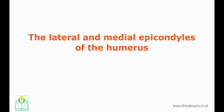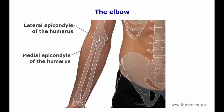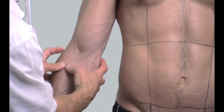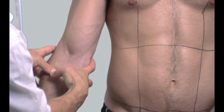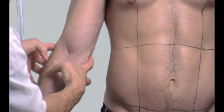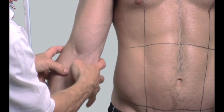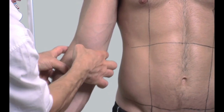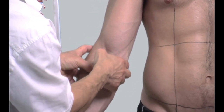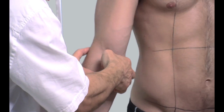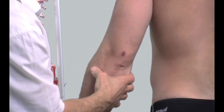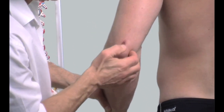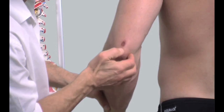The lateral and medial epicondyles of the humerus are bony projections of the distal end of the humerus. The medial epicondyle is larger and more prominent than the lateral epicondyle. The ulnar nerve runs in a groove on the back of the medial epicondyle.